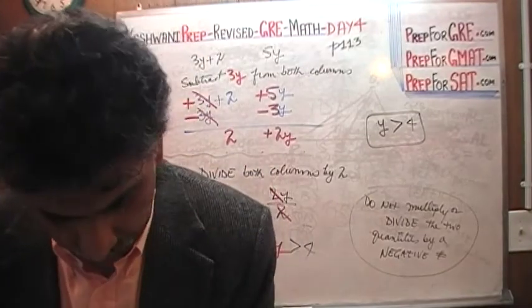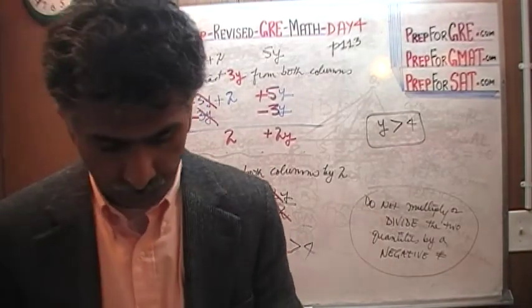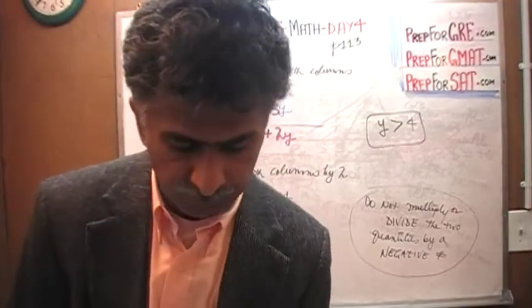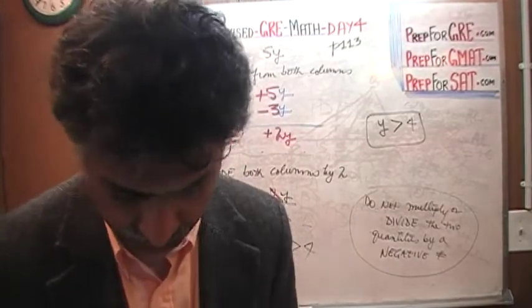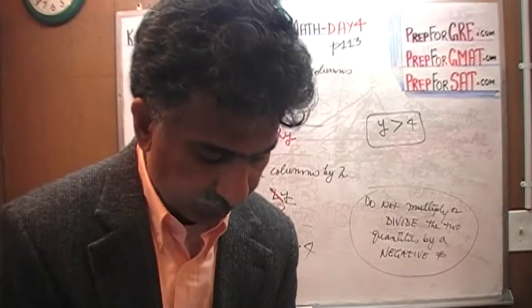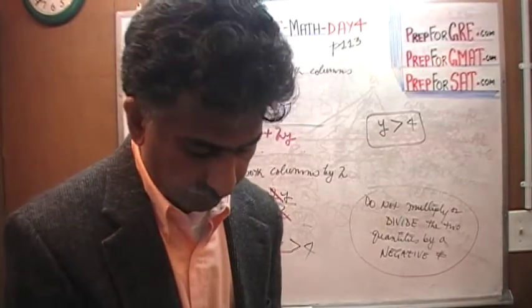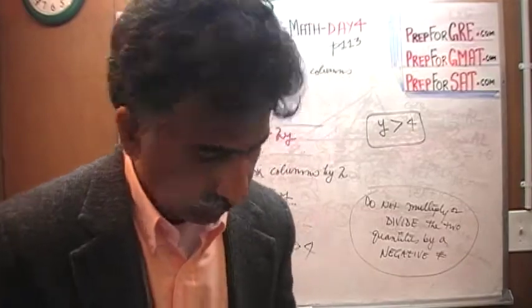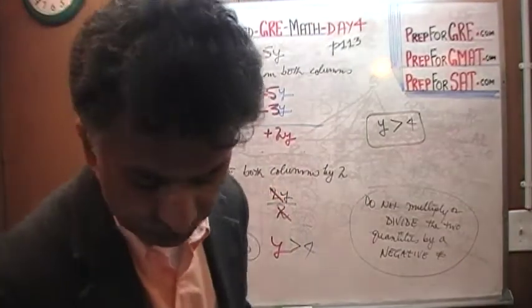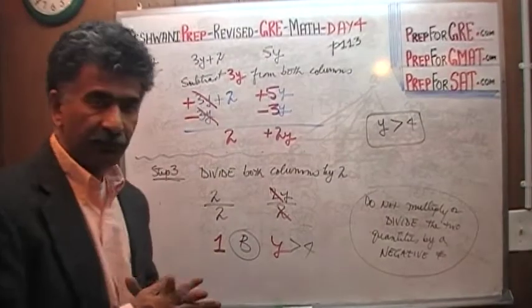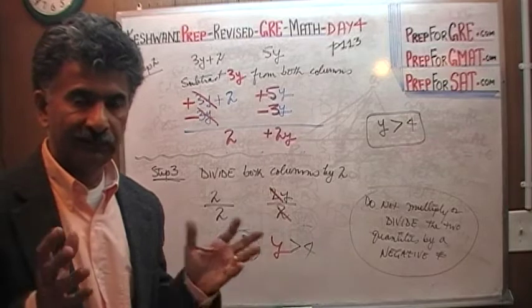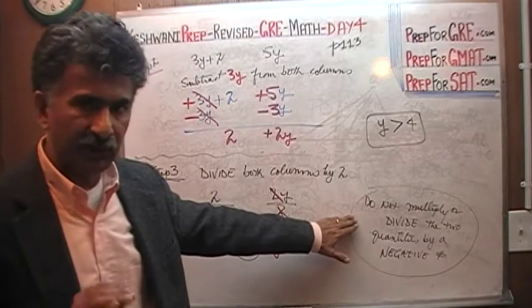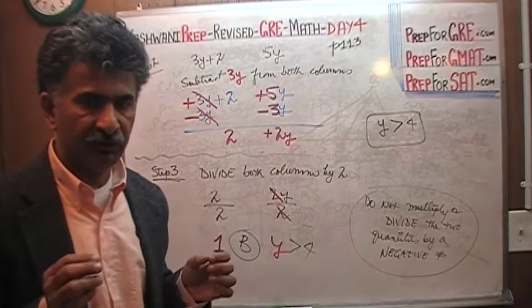I will see you tomorrow on day number 5, when we will do a problem that appeared in one of the old exams as the most difficult quantitative comparison question — 80% of the people who took the exam missed it. The question appears on the next page, page number 114. We will do that question tomorrow on day 5. As far as today is concerned, we are done. You can do all of this manipulation as long as you treat both columns in the same manner. Always remember: do not deal with negative numbers — do not divide or multiply the two quantities by a negative number, because it changes the direction of the inequalities.